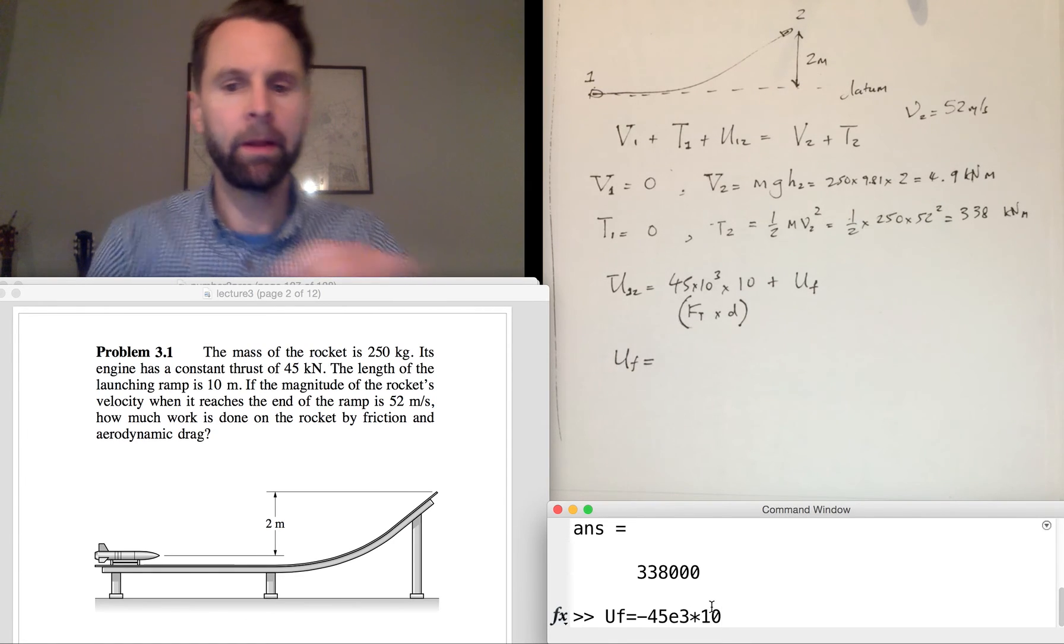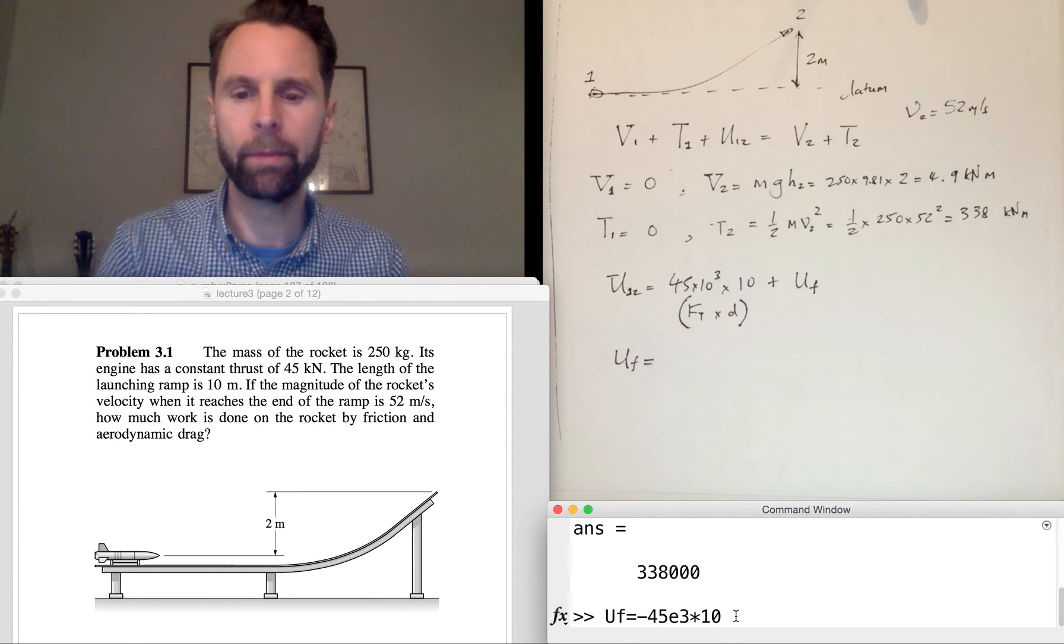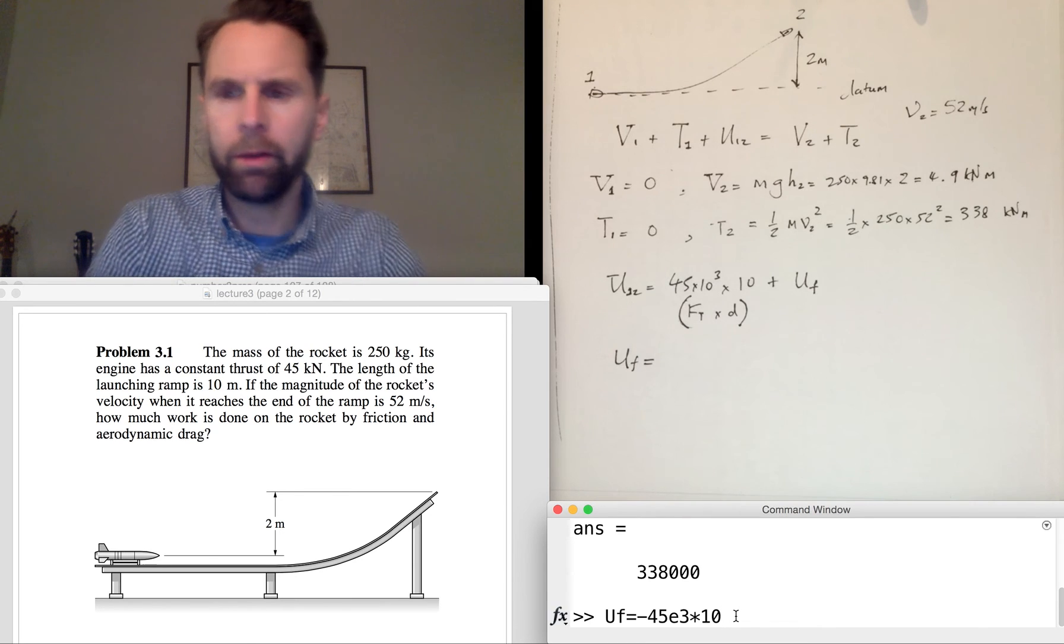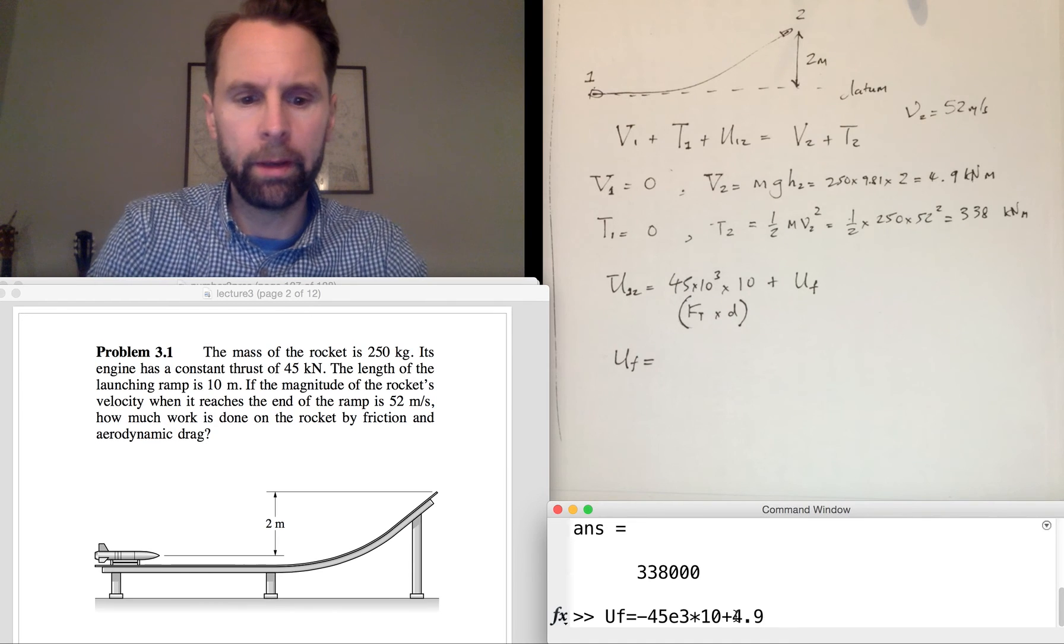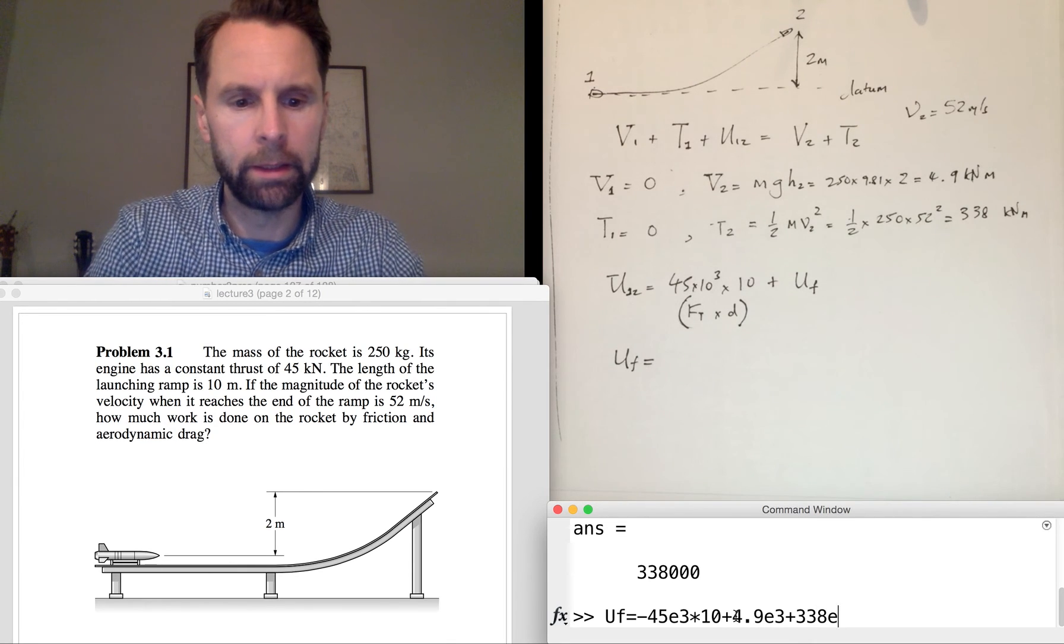So that's 45e3 times 10—e3 just means times 10 to the power 3. And V2 from our workings earlier, it's 4.9e3 plus 338e3.